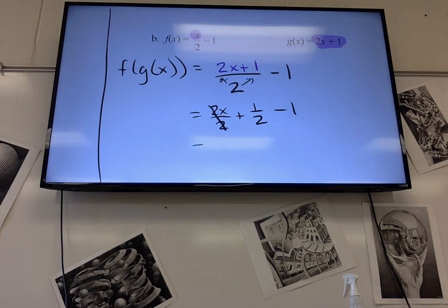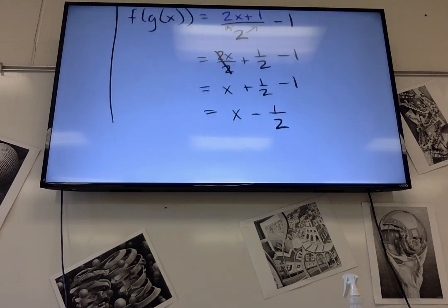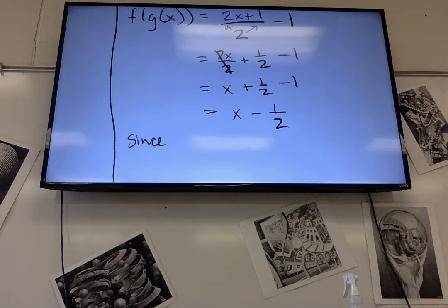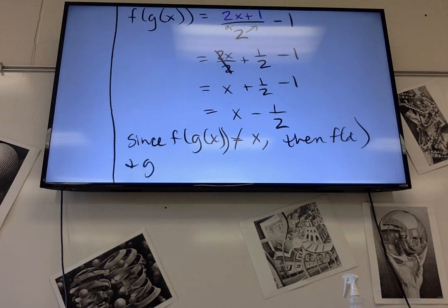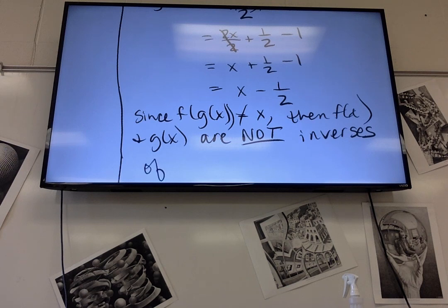Now the 2's will cancel, but 1 half minus 1 will not. So since that happened, they're not inverses and we can stop. Since f of g of x is not equal to x, then f of x and g of x are not inverses of each other.